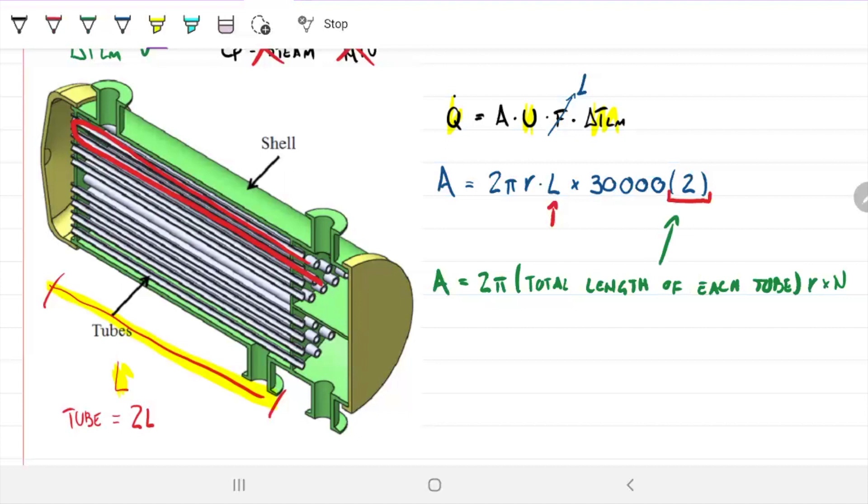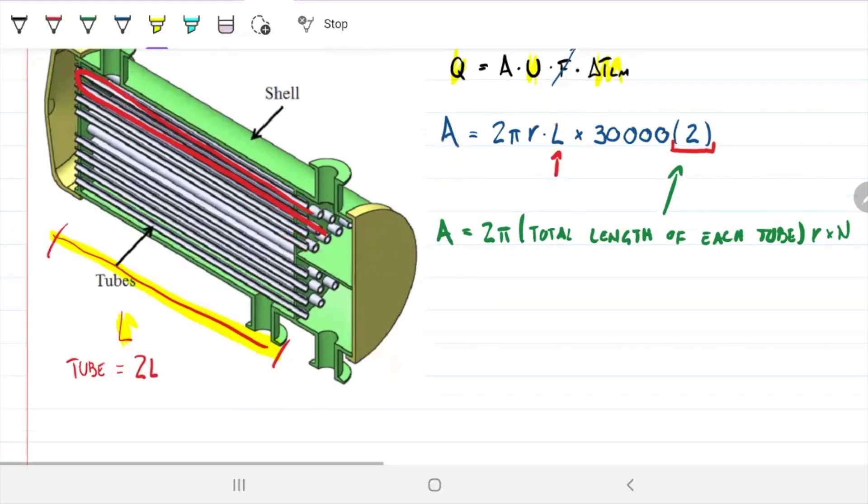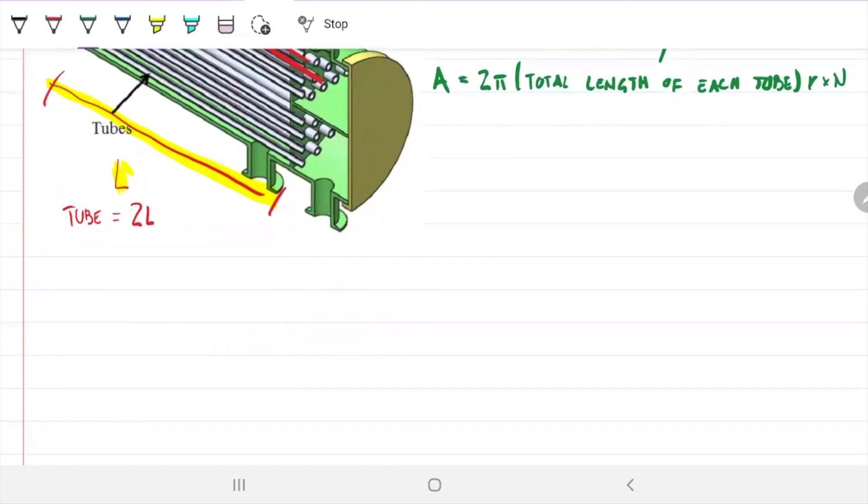It's the same way of thinking: 2π times the total length of each tube times R times the number of tubes. But since we know our L is actually 2L equals one tube, we're going to have a 2 there. That's why I define my L as being this distance from the beginning. So that's the only thing that's different on this problem. What are we going to do? We can find our delta T log mean and overall heat transfer coefficient so we can solve this problem. But to find delta T log mean, we need to find temperature of the cold out.